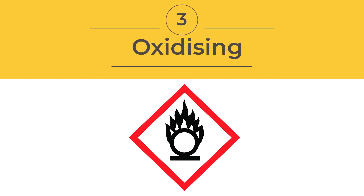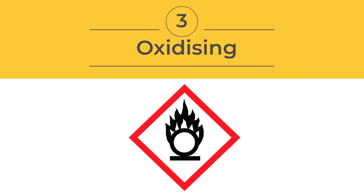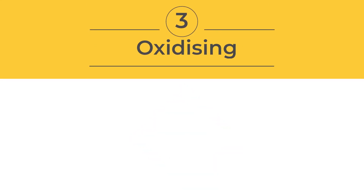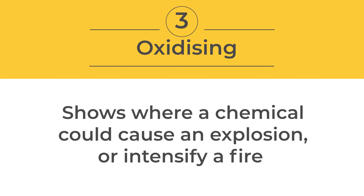The oxidising symbol is an open flame over a circle. This could show where a chemical in either liquid, gas, or solid form could cause an explosion or intensify a fire.